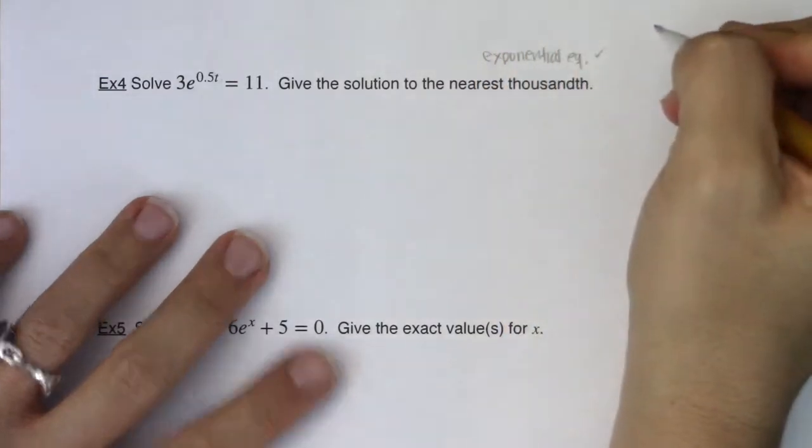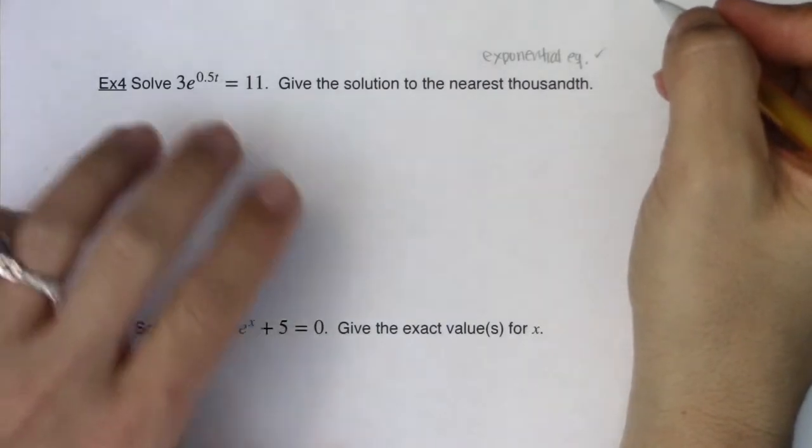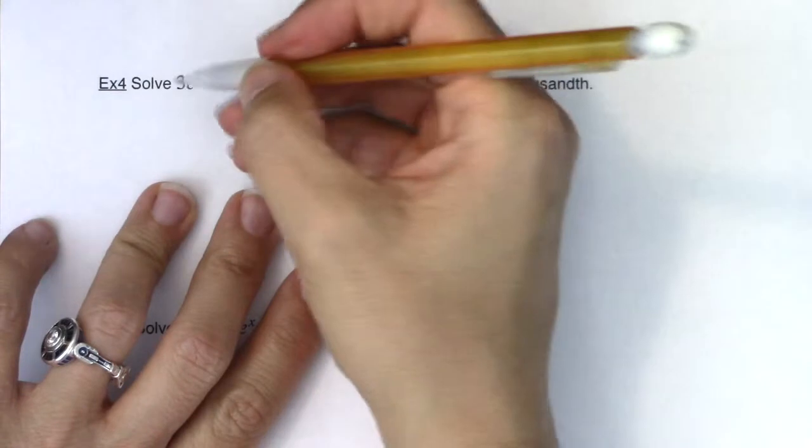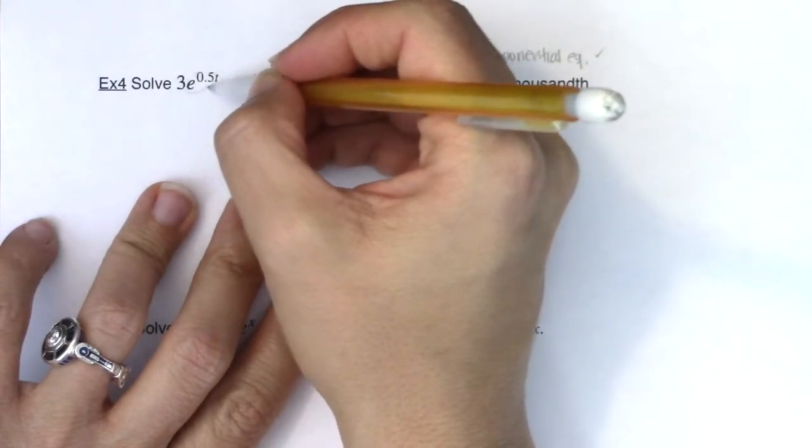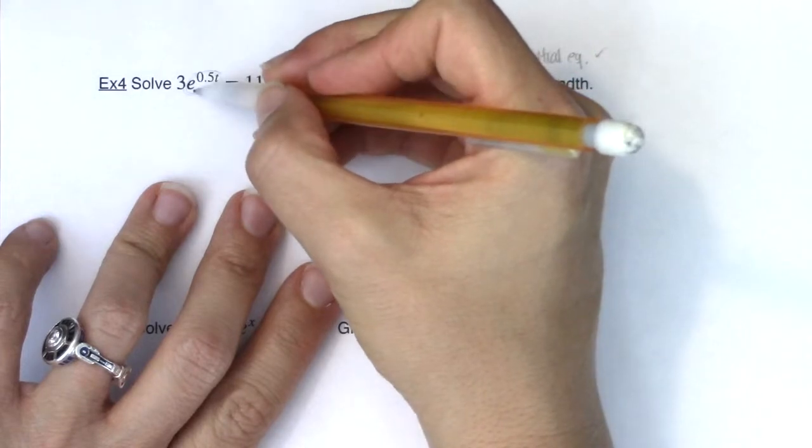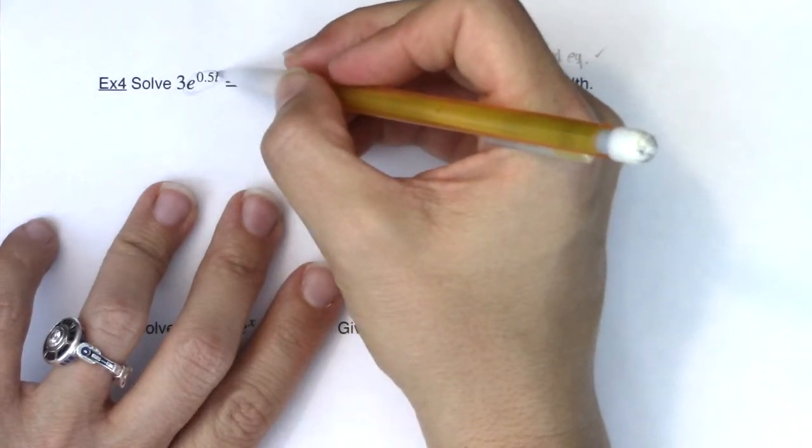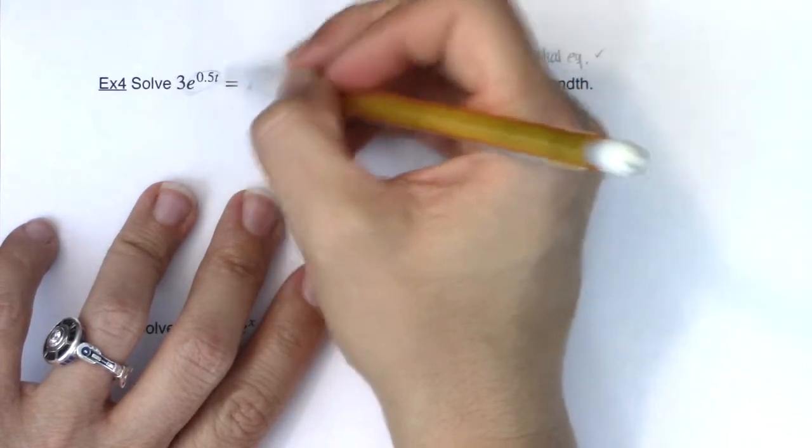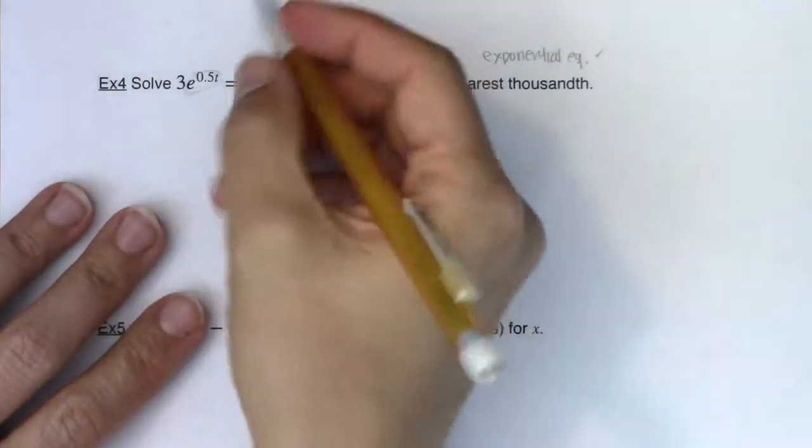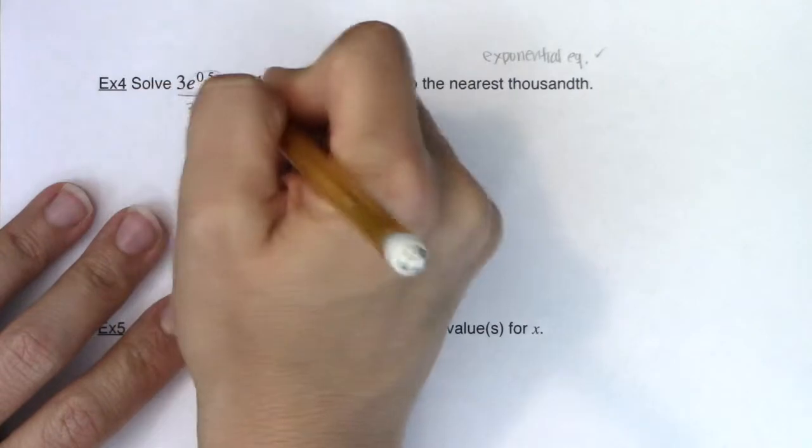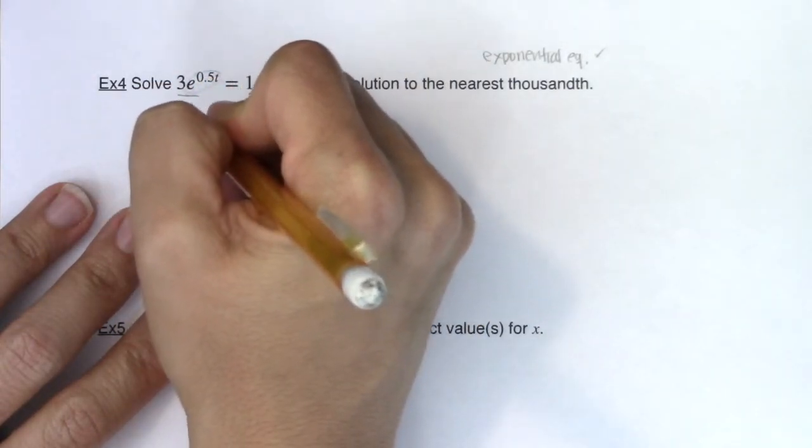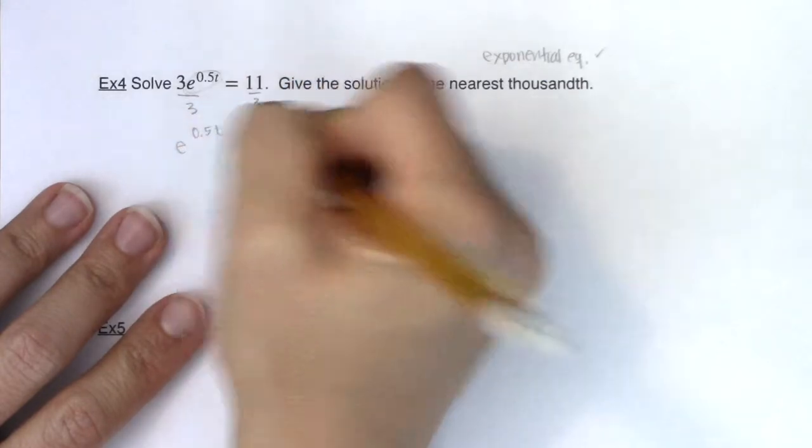Now, did I have the same bases or did I have different bases? Before we know for sure, I want to point out that our power is not isolated here on the left side. I have a 3 getting multiplied to this exponential expression, and I want it isolated - all by itself on the left side of the equation. So let me divide by 3 here, and I'm going to get e^0.5t would be equal to 11 thirds.